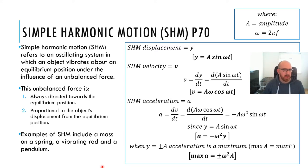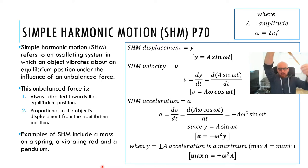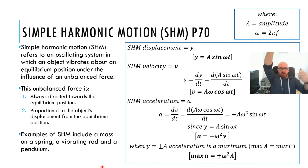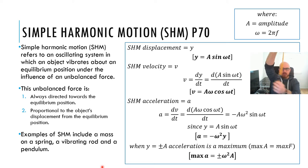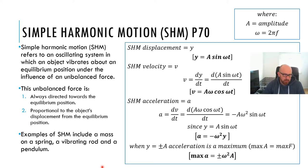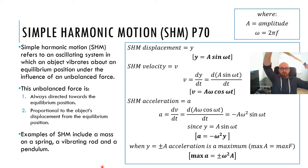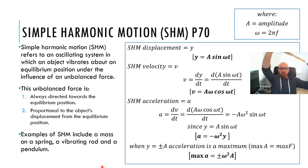This unbalanced force is always directed towards the equilibrium position. So if we hold the keys and they're swinging back and forth, the force is always towards the centre. If it is swinging that way, the force is down towards the centre. If it's swinging that way, the force is down towards the centre. The force is proportional to the object's displacement from the equilibrium position — the further it is away, the more force it experiences.